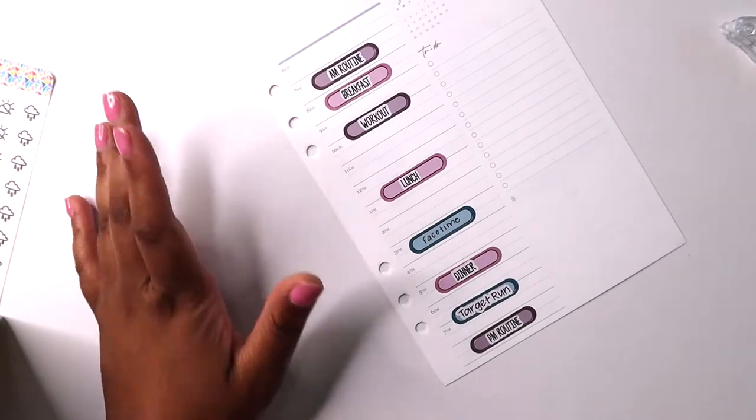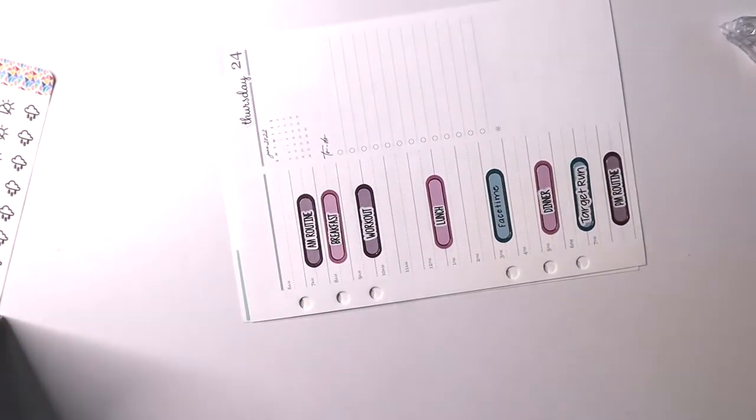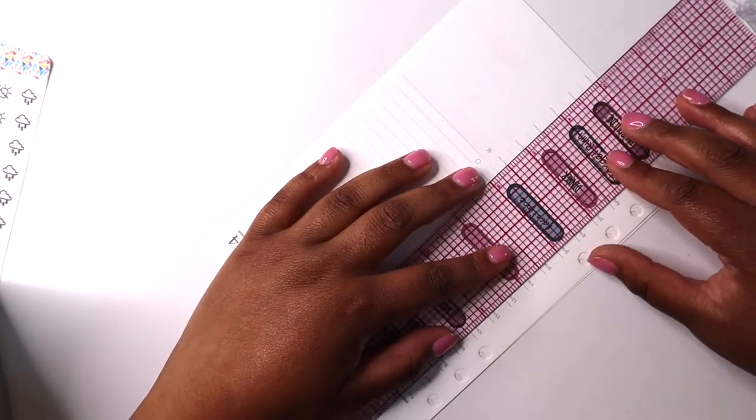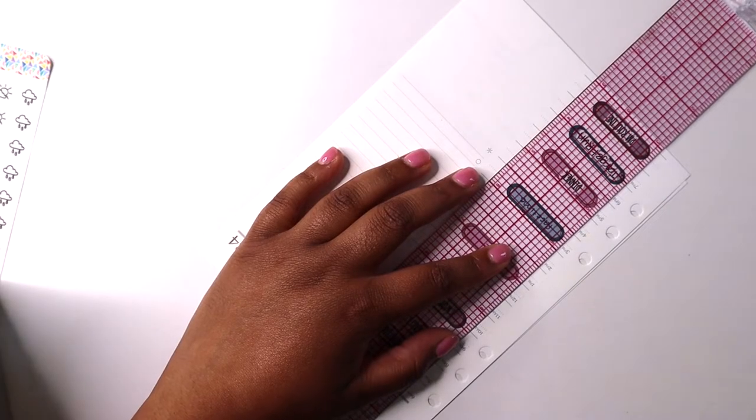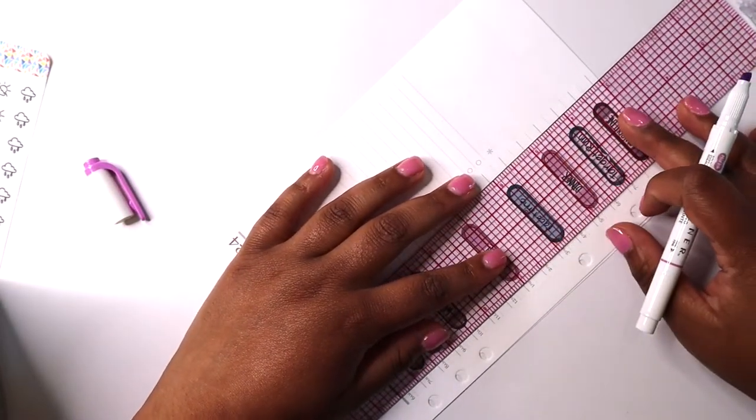All right, so that's basically the schedule for today. I will go ahead and highlight my work schedule. It's really nice for me to see it visually and I'm going to use this other mild liner that I don't get to use very often.